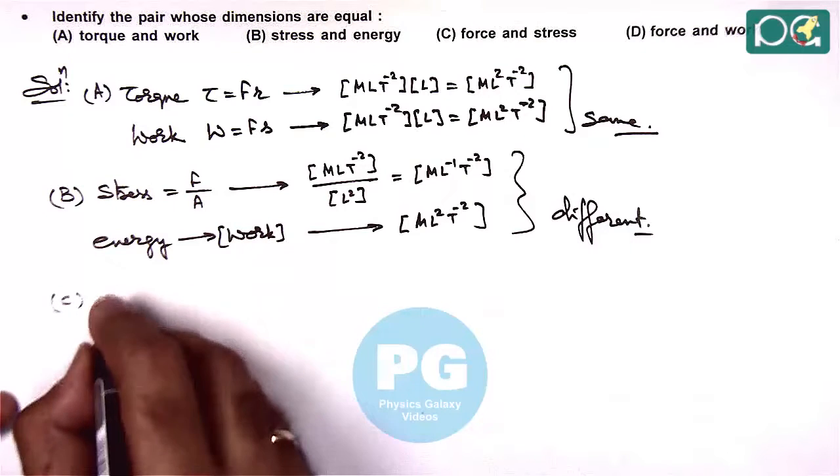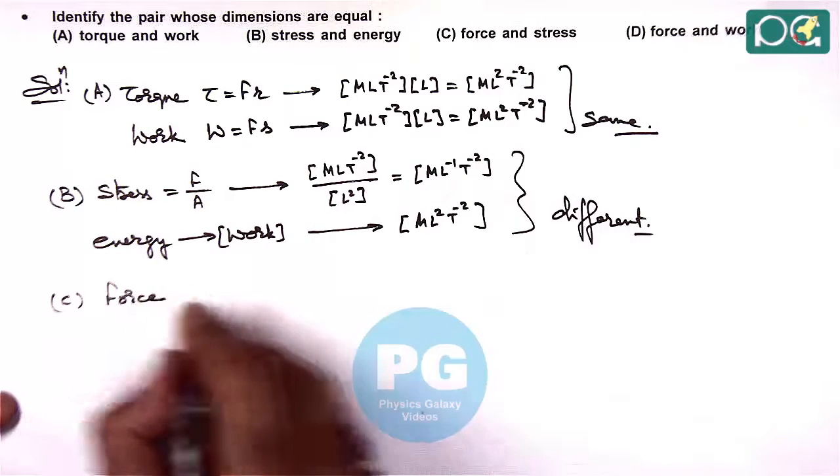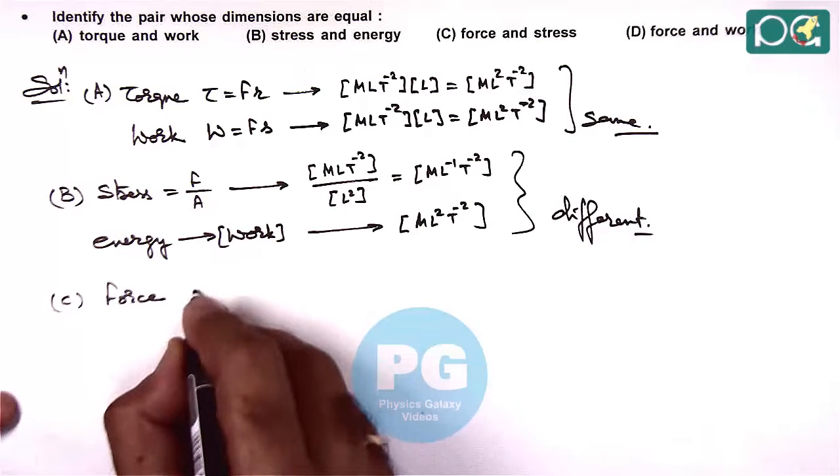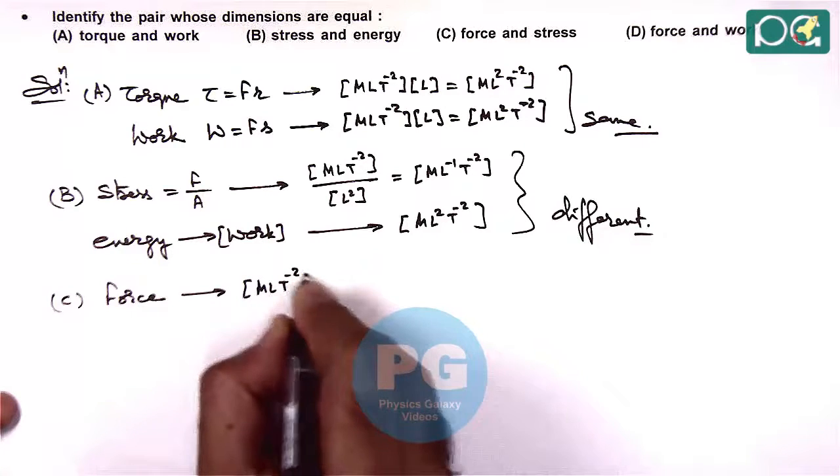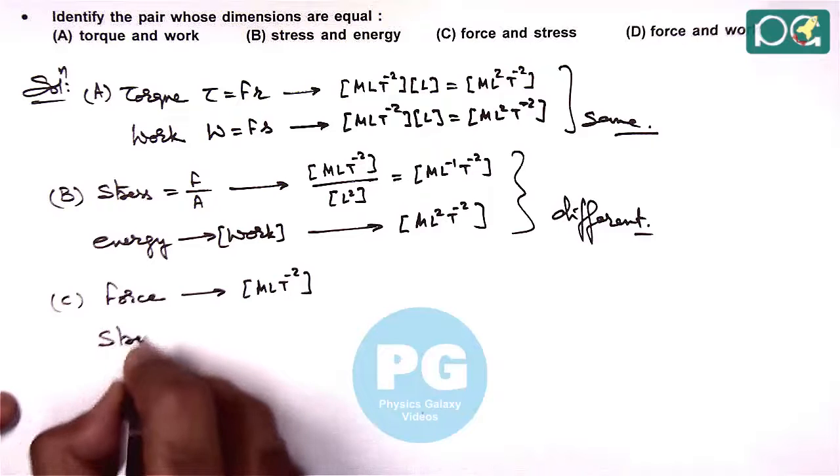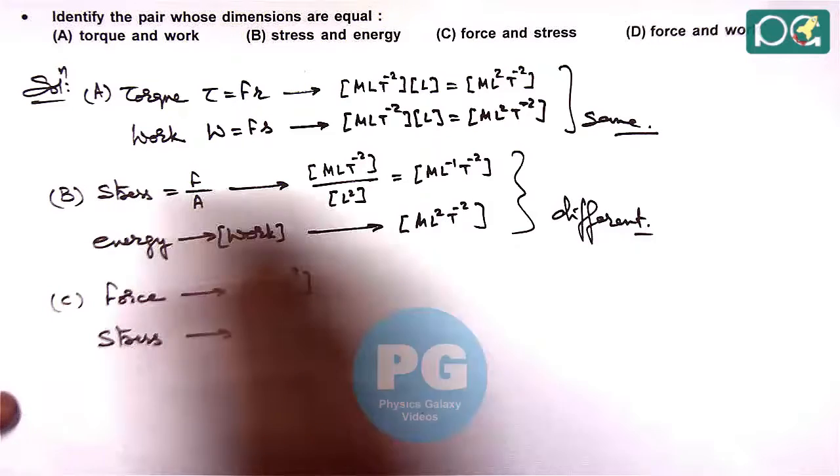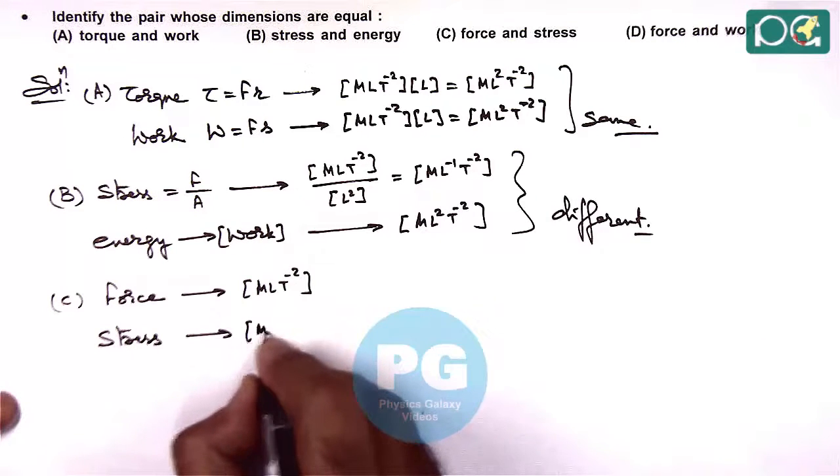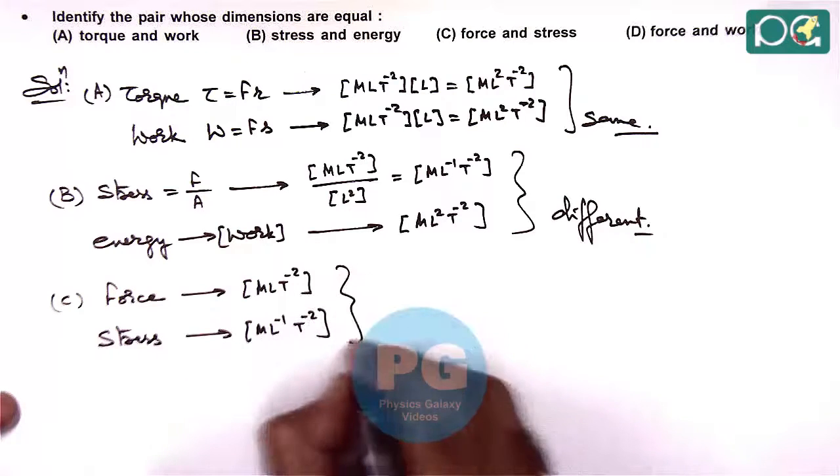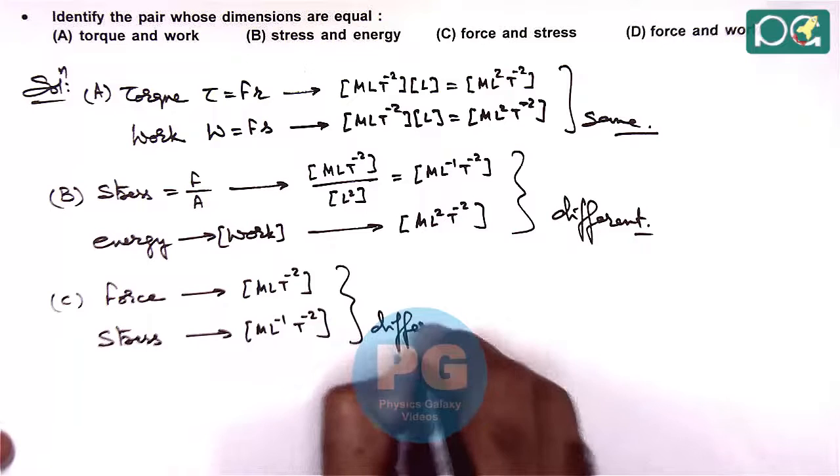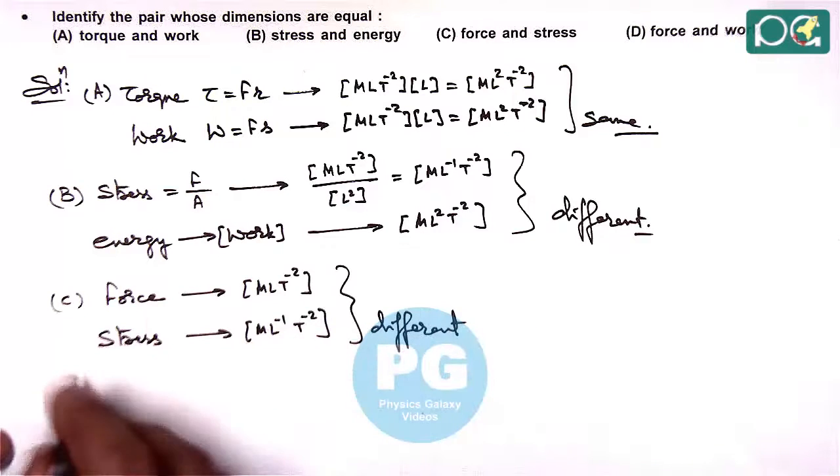For option C it is force. The dimension of force we can directly write M L T minus 2, and that of stress we have just now calculated it is M L minus 1 T minus 2. So these are also different, not having same dimension.